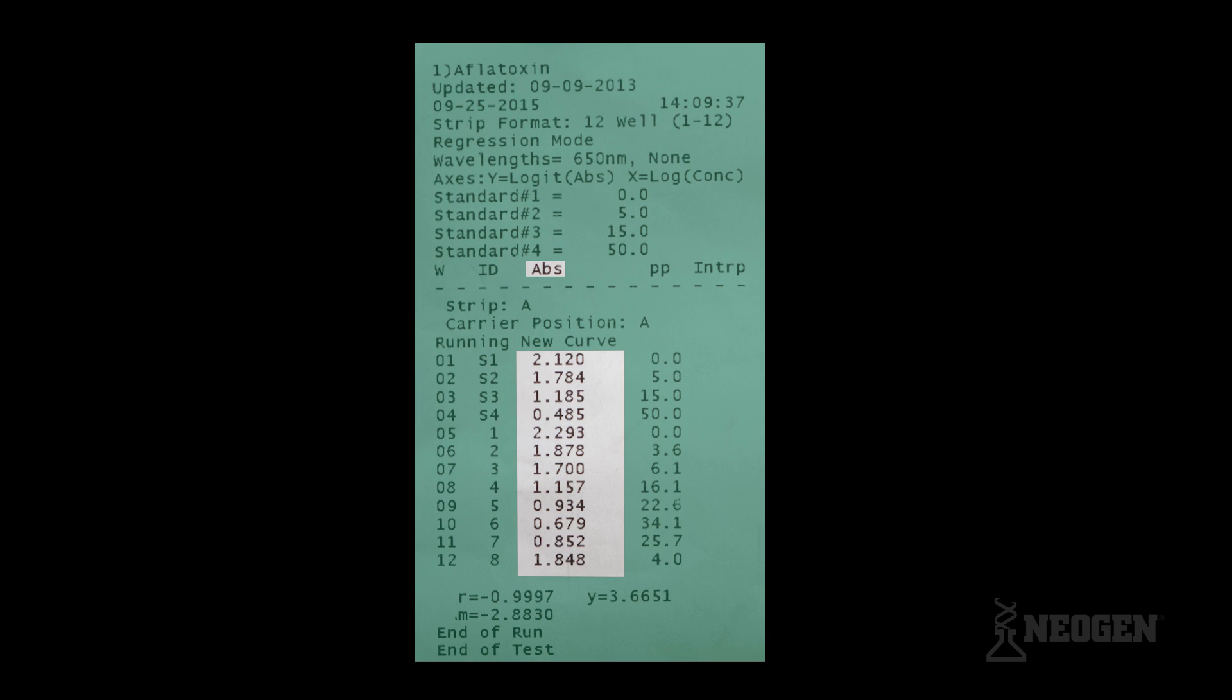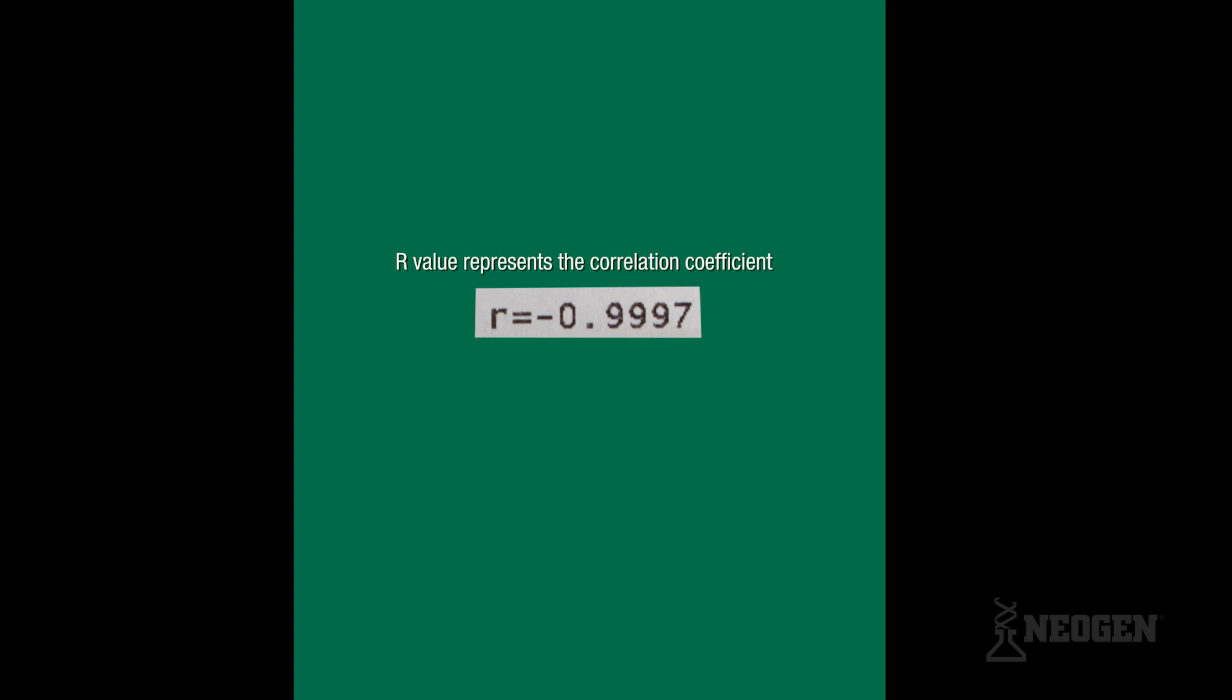The reader will print out the receipt with quantitative values for controls and sample. The middle column is the absorbance of each well. The right-hand column shows the exact parts per billion of the controls and sample. Below the columns, you will see the R-value. The R-value represents the correlation coefficient. If this value is less than 0.98, the test is invalid and must be run again. This value ensures the test was performed correctly.